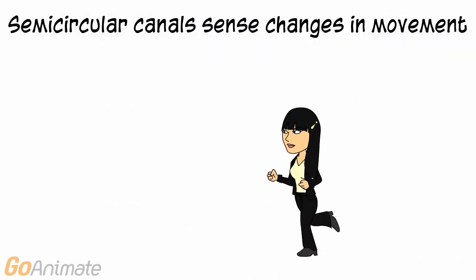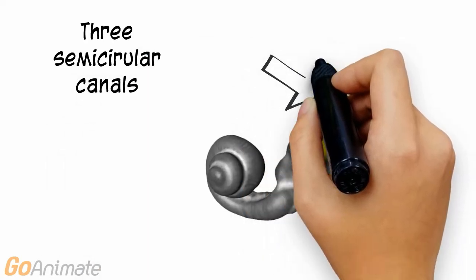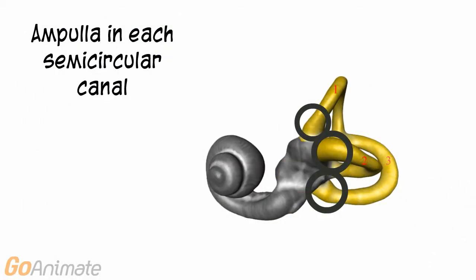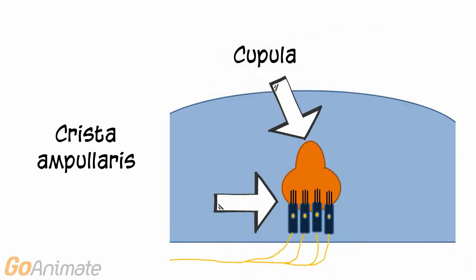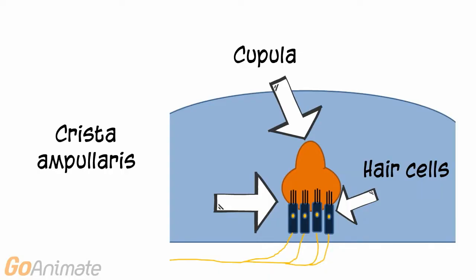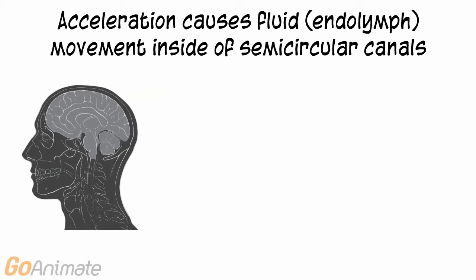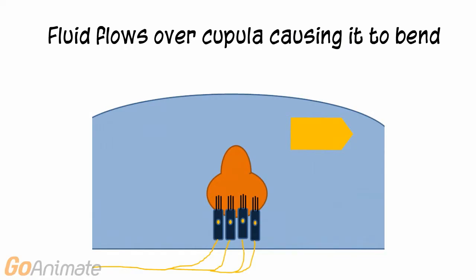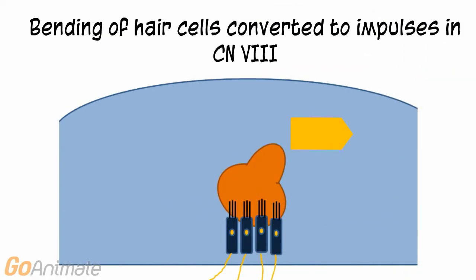The semicircular canals sense changes in movement. There are three semicircular canals, and each contains an area called the ampulla. Inside the ampulla is a structure called the crista ampullaris; the top portion of the crista ampullaris is called the cupula. Changes in motion or acceleration cause fluid called endolymph inside of the semicircular canals to move. The fluid flows over the cupula, causing it to bend. The stereocilia of the hair cells connected to the crista ampullaris also bend, and the cells transmit impulses to cranial nerve 8.